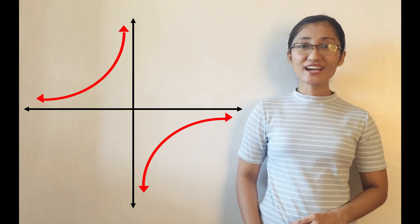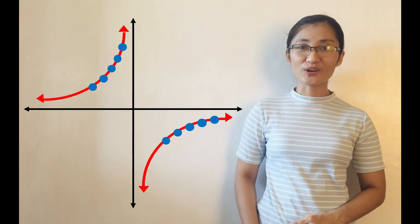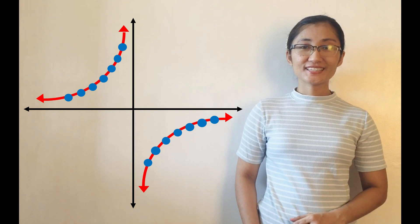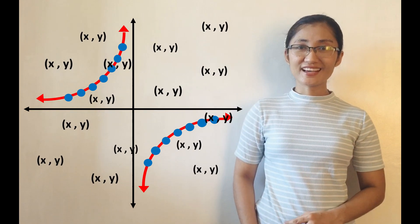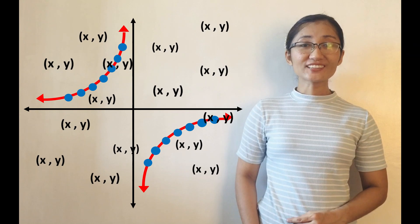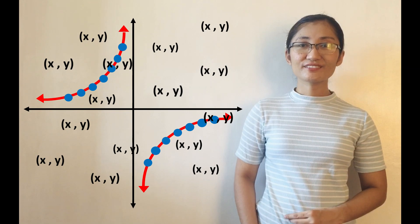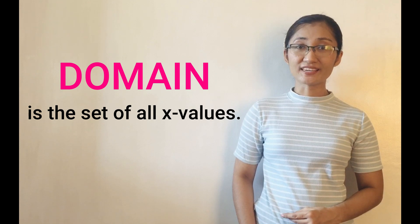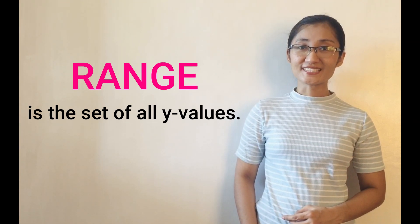Like any graph, the graph of a rational function is composed of points — a set of points. Each of these points has x and y. Collect all x's or abscissa, and separate all y's or ordinates, and they form two groups. The group of x values is termed domain, and the group of y values is called range.